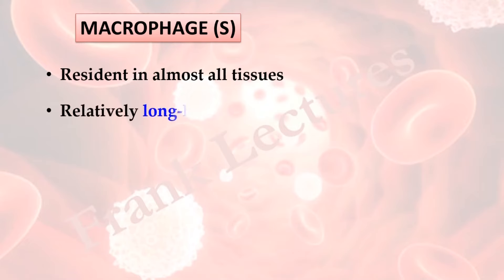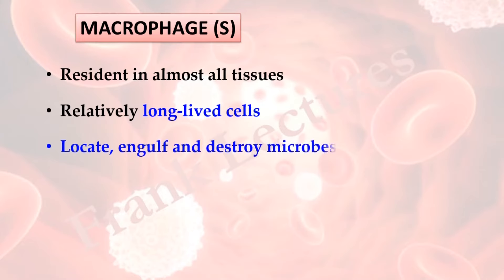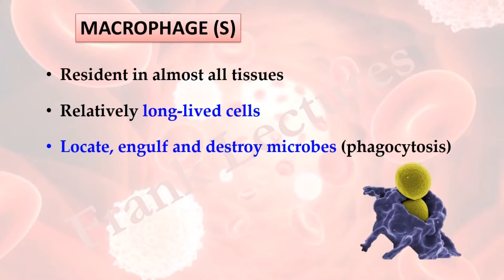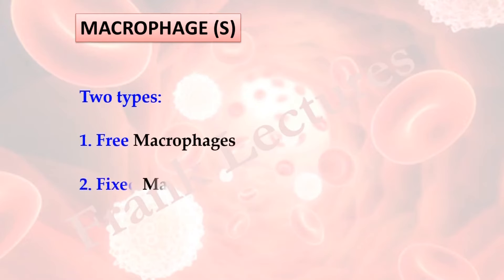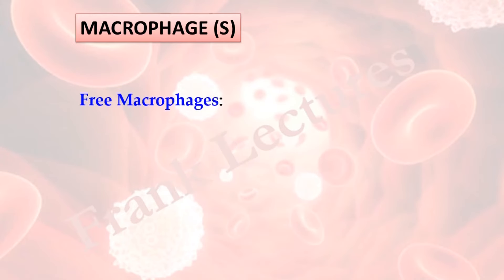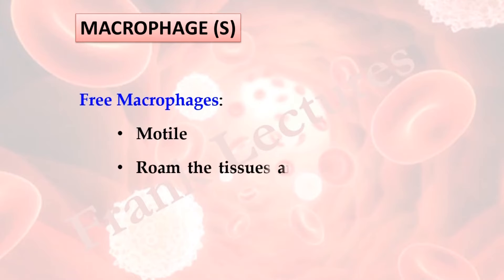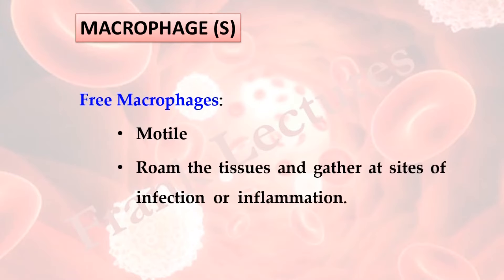Macrophages are resident in almost all tissues. They are relatively long-lived cells; they locate, engulf, and destroy microbes by the process known as phagocytosis. Macrophages are of two types: free macrophages and fixed macrophages. Free macrophages are motile — they roam the tissues and gather at the site of infection or inflammation.